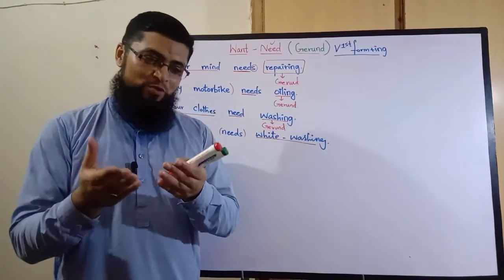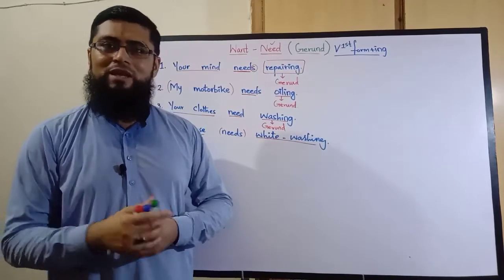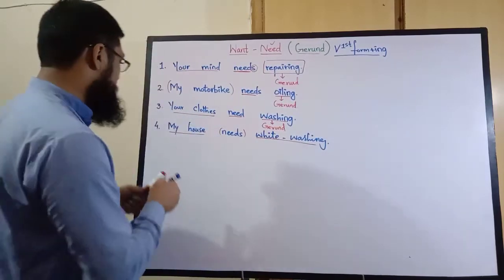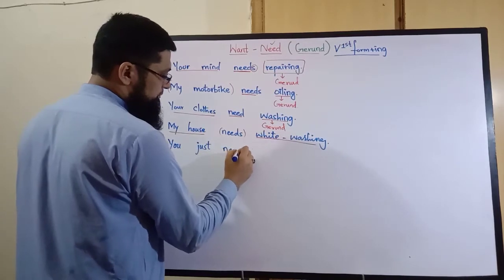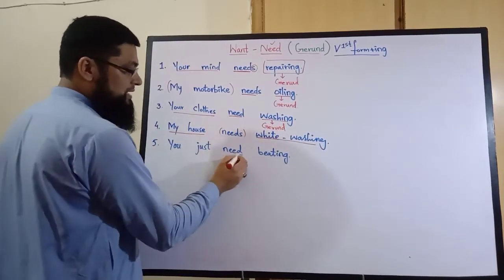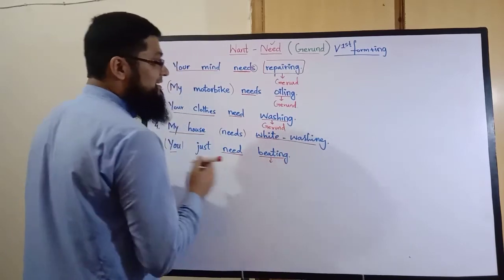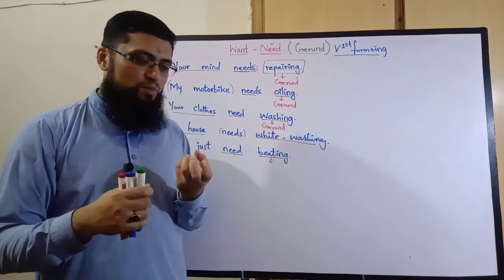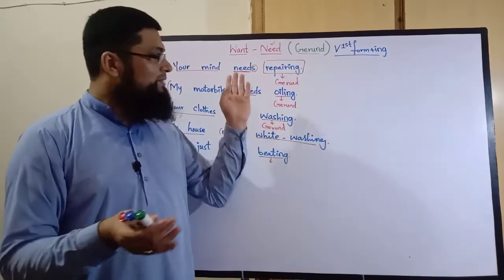اگلی مثال: 'آپ کو مار پڑھنے والی ہوئی ہے' یعنی آپ کو مار پڑھنے کی ضرورت ہے — جیسے بچے شرارت کر رہے ہوں تو parents کہتے ہیں: 'You just need beating.' اس میں 'you' second person ہے اس لیے need استعمال کیا، اور آخر میں gerund 'beating' لایا۔ جب بھی جملے میں لگے کہ کسی کام کی ضرورت ہے تو need استعمال کریں۔